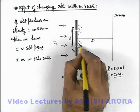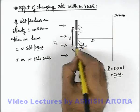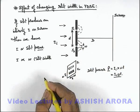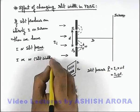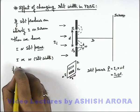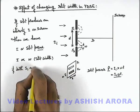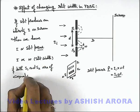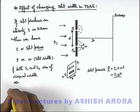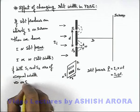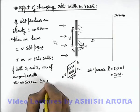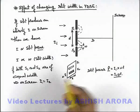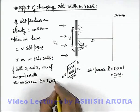So if w is the width of individual slits, their intensity which these slits are producing on screen will be proportional to the slit width, proportional to this w. So here we can write, if both S1 and S2 are of equal width, this implies on screen I₁ equals I₂, where I₁ and I₂ are the intensities produced by these slits individually on screen. Say if we write it I₀.